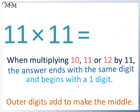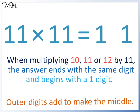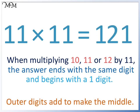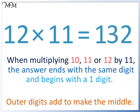With 11 times 11, our answer ends in a 1, begins with a 1, and 1 plus 1 equals 2 — so 11 times 11 equals 121. 12 times 11 equals 132.